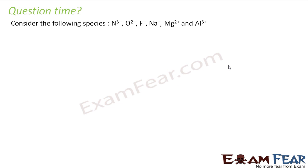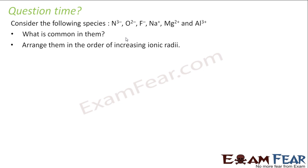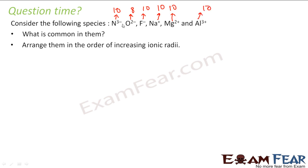We have the following species: N³⁻, O²⁻, F⁻, Na⁺, Mg²⁺, Al³⁺. The question is: what is common? Nitrogen has 7 electrons — add 3 and it becomes 10. Oxygen has 8 — add 2 and it becomes 10. Fluorine has 9 — add 1 and it becomes 10. Sodium has 11 — subtract 1 and it becomes 10. Magnesium has 12 — subtract 2 and it becomes 10. Aluminium has 13 — subtract 3 and it becomes 10. They are all isoelectronic species with 10 electrons.